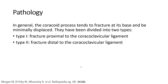In general, the coracoid process tends to fracture at its base and be minimally displaced. They have been divided into types. Type 1: fracture proximal to the coracoclavicular ligament.